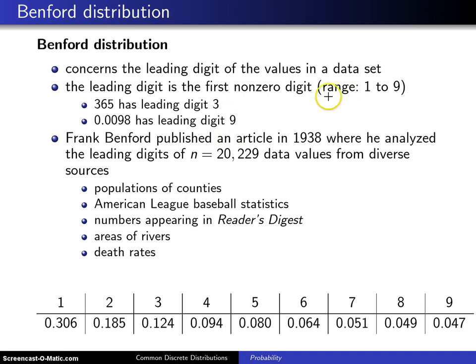Notice that the range of the leading digit is from 1 to 9, but the big question is what is the distribution of those leading digits? You might assume that for most data sets the digits 1 through 9 would be equally likely.